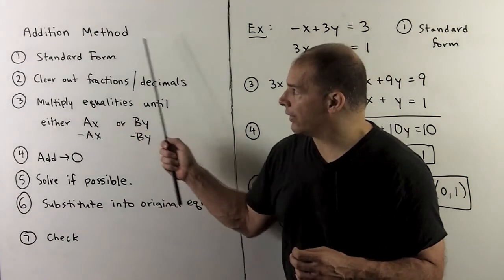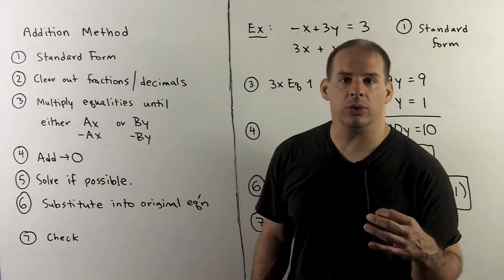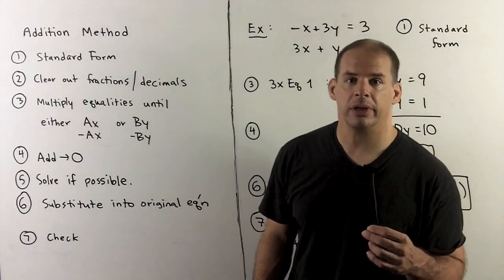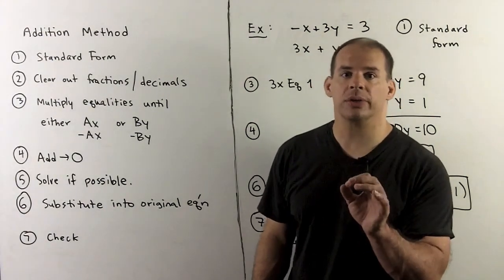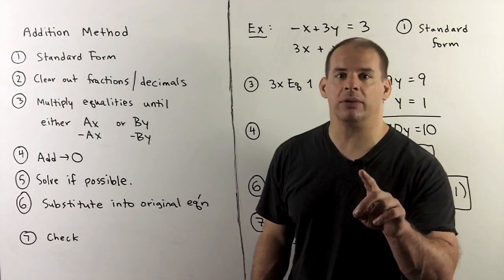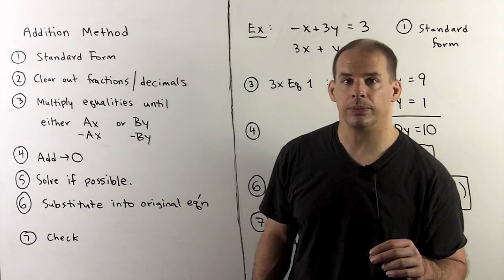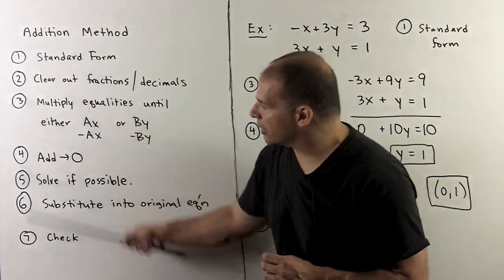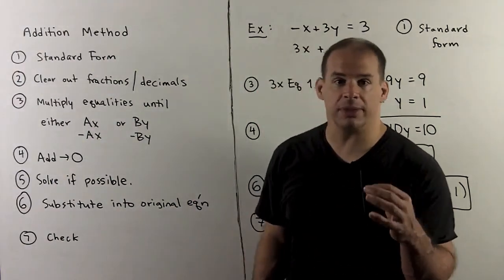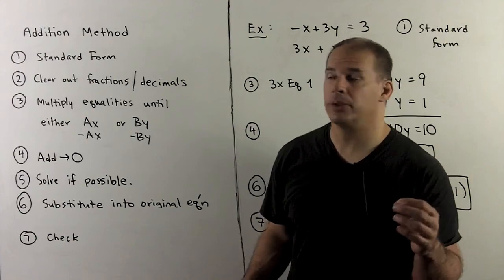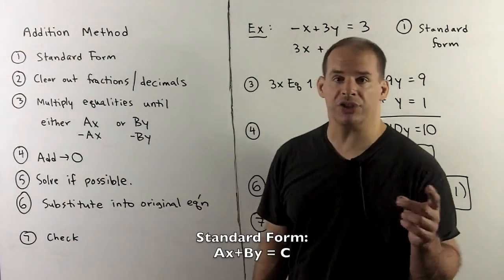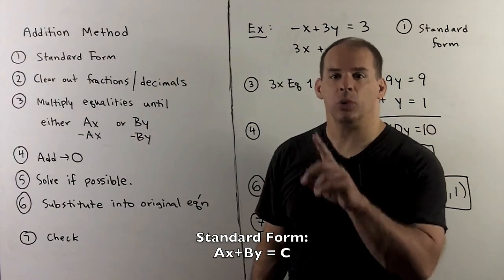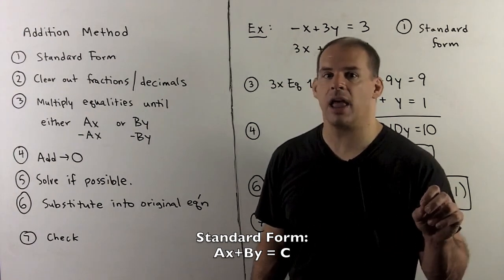The addition method is the format we'll use when we solve systems of linear equations with three or more variables — we don't do that in this course, so this is just foreshadowing for future work. Now, as with the substitution method, we have a checklist to work through, so this is the type of thing you want to put on a note card. First, we put both equations in standard form: ax plus by equals c, lining up the x, y, and constant columns.